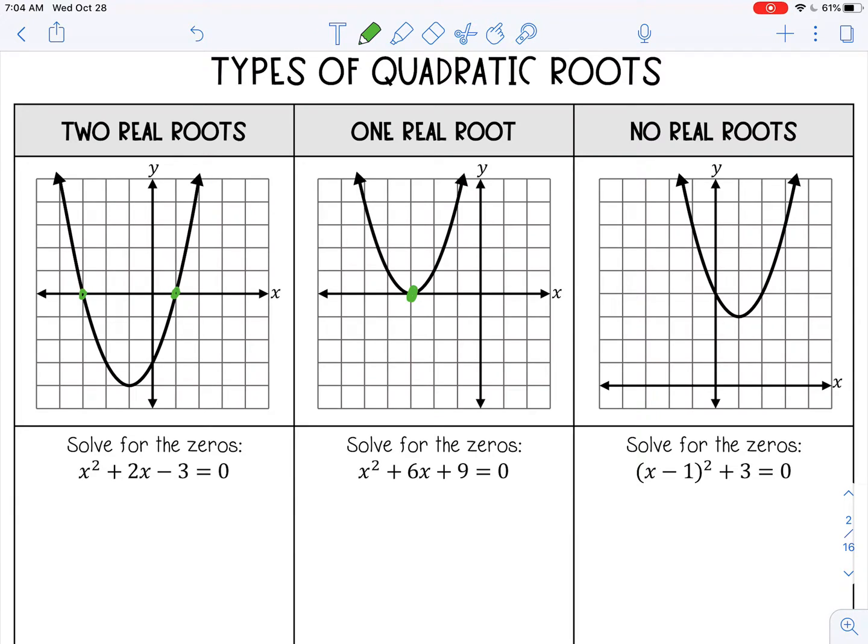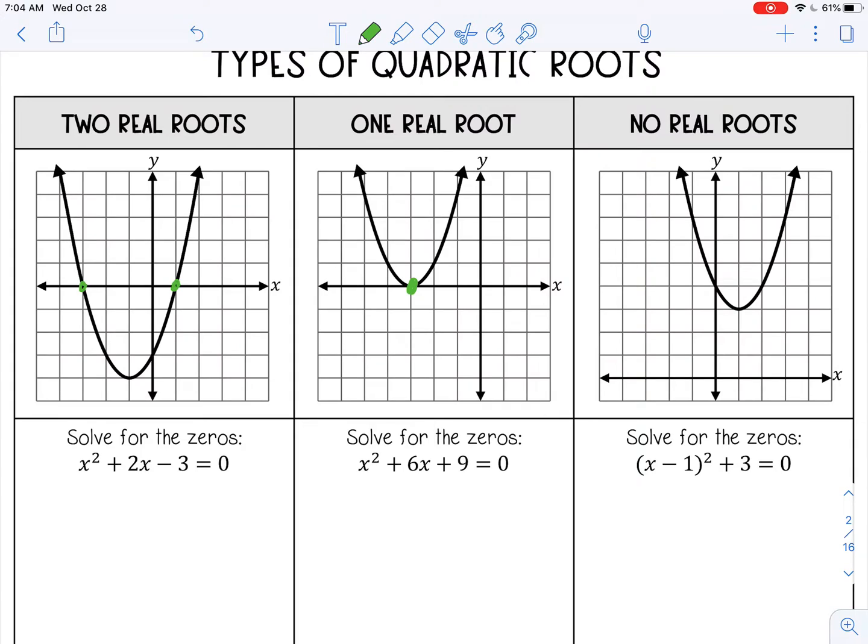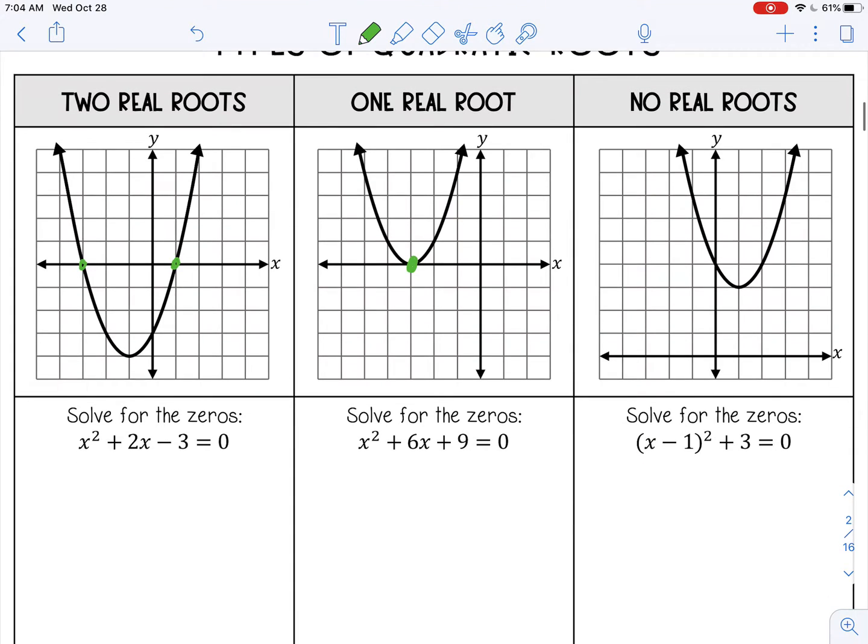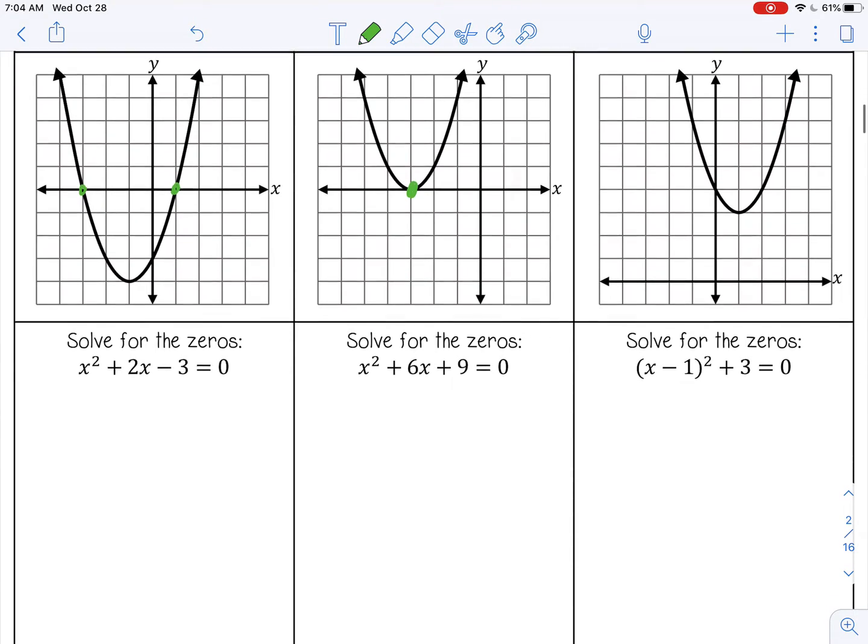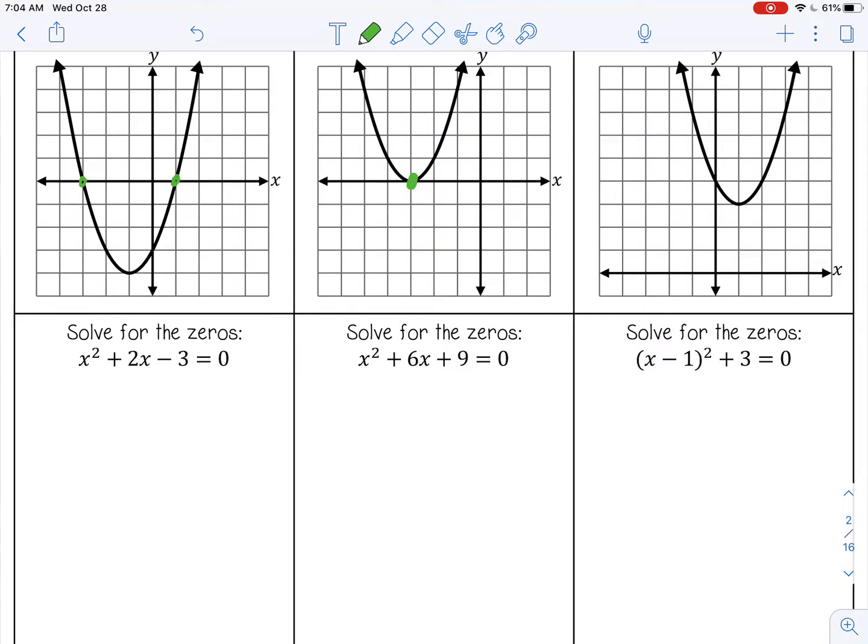Let's actually solve and show where these roots are. Of course, you can tell from the graph, but let's make the connection between solving for zeros and how they look on the graph. So the first one, x squared plus 2x minus 3. Let's try to factor that.